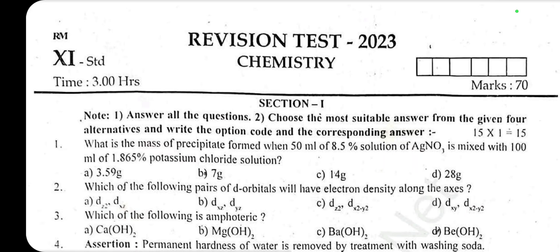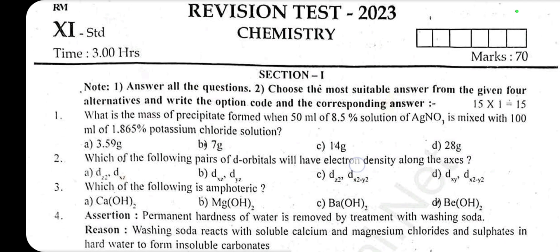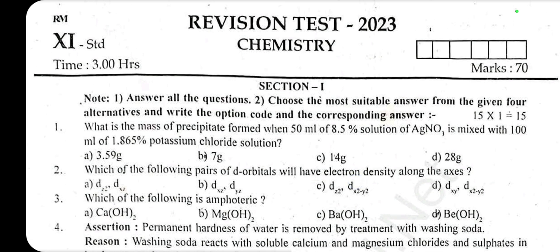Peace be upon you and your family. This is a revision test for 2013 on 11th chemistry. One full percent question with the answer on our video. What is the mass of precipitate formed when 50 ml of 8.5 percent solution of AgNO3 is mixed with 100 ml of 1.865 percent potassium chloride solution? Book pair question answer: 3.59.